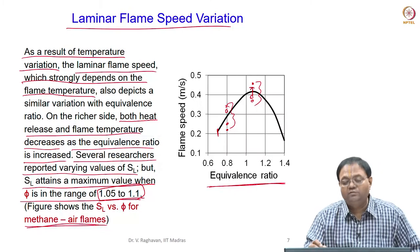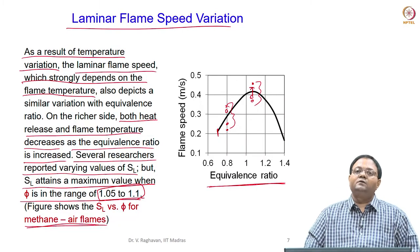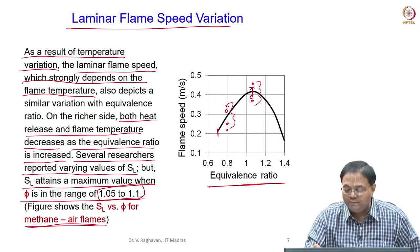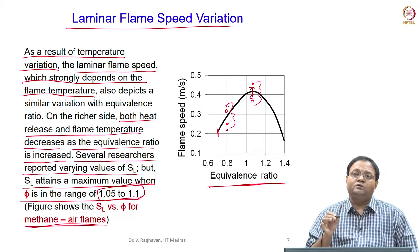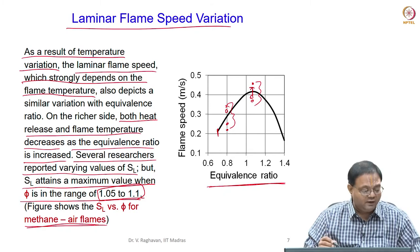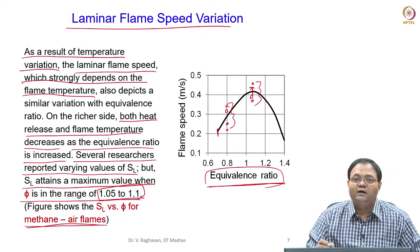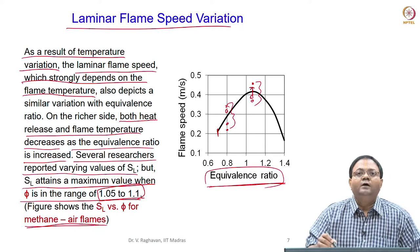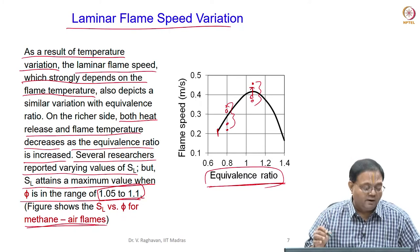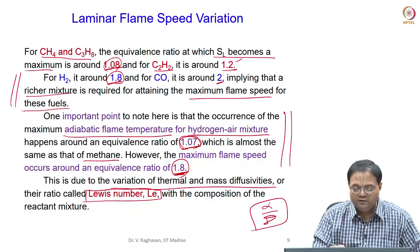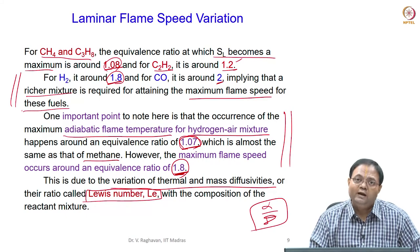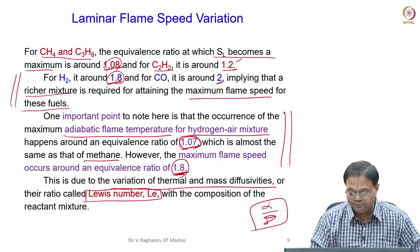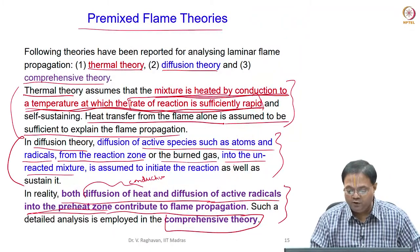Similarly, for laminar flames, SL also shows a typical variation producing a maximum at the slightly richer point. The temperature dependence of SL is clearly illustrated — the equivalence ratio affects temperature, and it affects SL in a similar manner. But for hydrogen-type fuels there are some discrepancies due to the highly non-unity Lewis number and temperature-dependent property values.